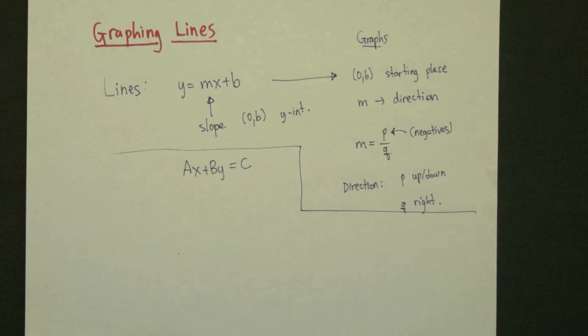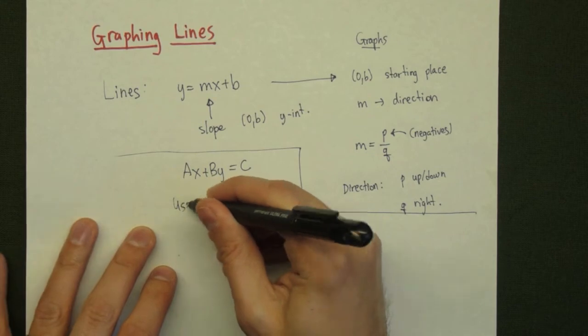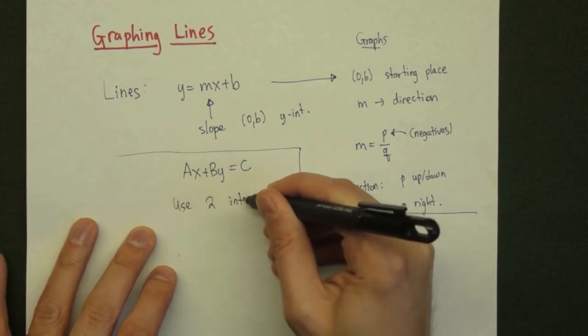To graph the second type of line, the line where all the variables are on the same side, we are going to use two intercepts, the x and the y-intercept, in order to graph this.